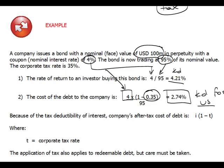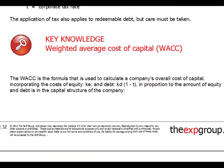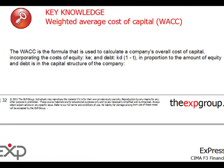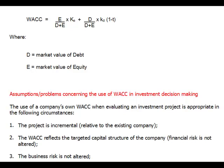That was about the cost of debt. Now let's look at weighted average cost of capital. Weighted average cost of capital is the discount rate used in the assessment of the viability of projects — when we calculate NPV, project cash flows are discounted using the weighted average cost of capital in most cases. As the name suggests, it is the cost of equity combined with the cost of debt reduced by tax, both weighted by the debt-to-equity ratio.